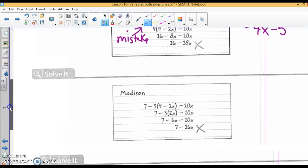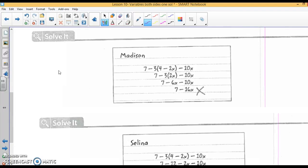This person combined like terms in parentheses first. 4 minus 2x you can't do. So there's the mistake.